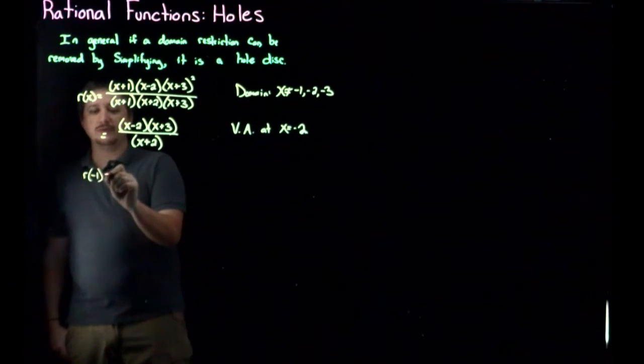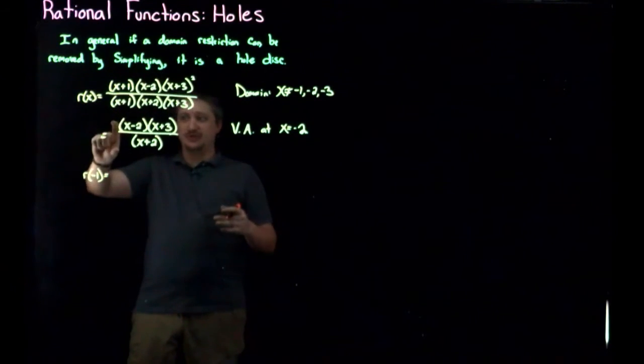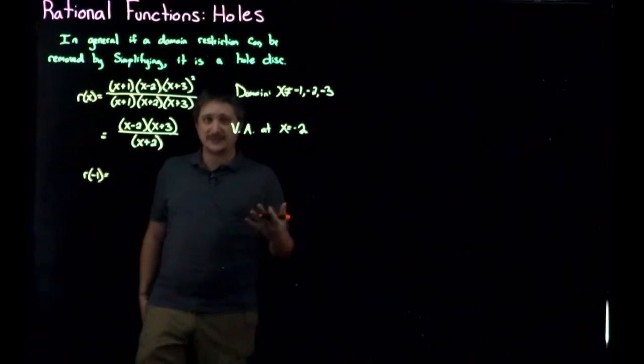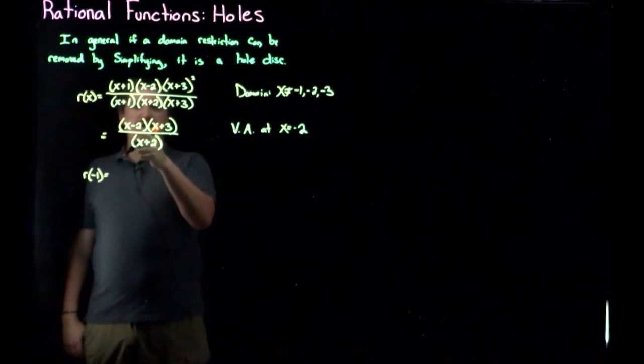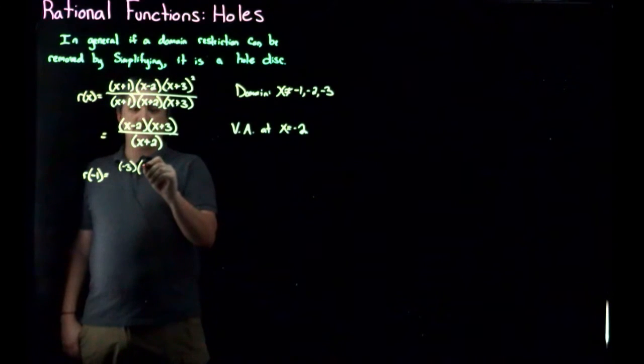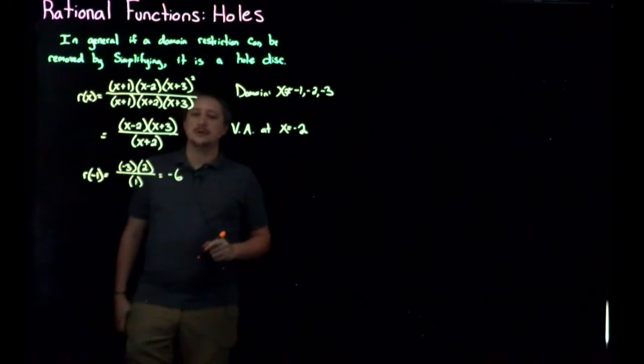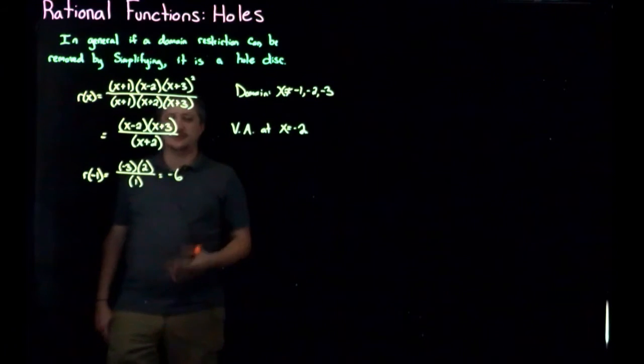So what I'm going to do is I'm going to plug it in and see what happens. And since it's no longer a domain restriction, this actually should, assuming it really isn't a domain restriction in a simplified form, really should compute nicely. So if I do that, I'm going to have negative one minus two, so that's going to be negative three, negative one plus three is two, over negative one plus two is one, and that is negative six. Right, there's no over zero or anything, so it worked out.